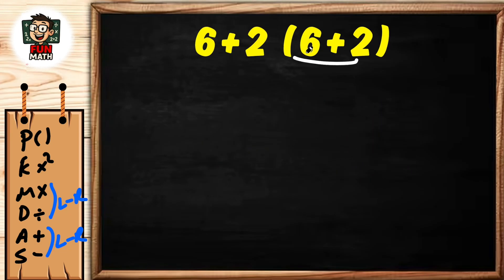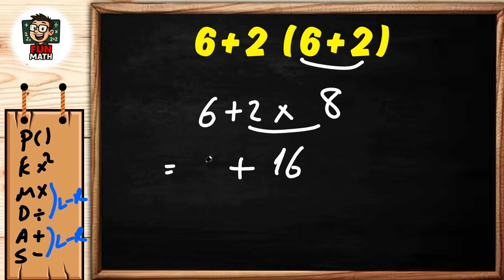First, parenthesis: 6 plus 2 equals 8. Multiplication: 8 plus 2, now multiplication: 2 times 8 equals 16 plus 6. Finally, 6 plus 16 equals 22. We solved the solution in detail.